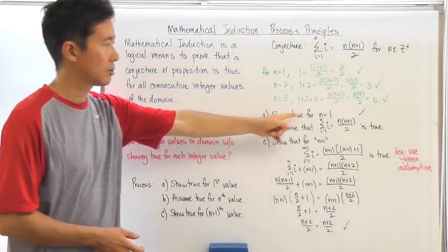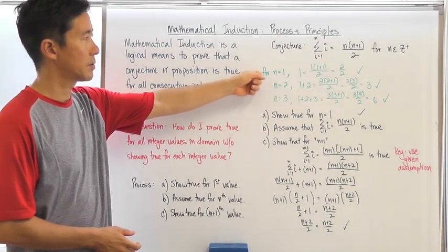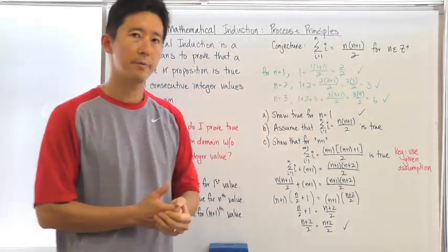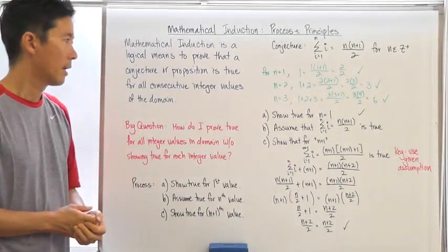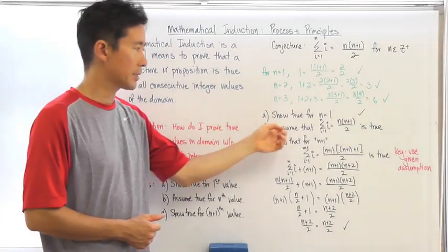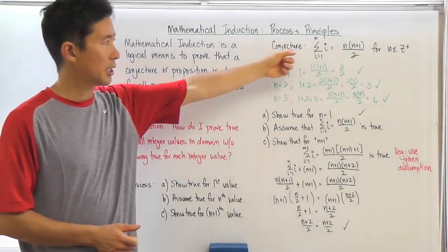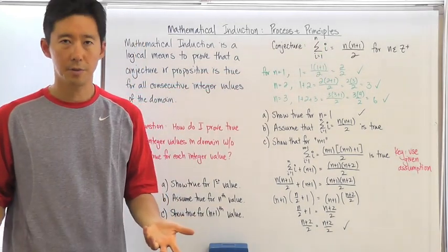Step A: show true for n equals 1. This is what you would write, and we've already shown it to be true. For the second step, I'm going to assume that the conjecture or proposition is actually true.